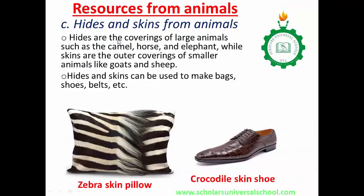You can also get hides and skins from animals. Hides are the covering of large animals such as camel, horse, and elephant. Skins are the outer covering of smaller animals like goats and sheep. Hides are gotten from camels, horses, donkeys, elephants, and birds. Skins are gotten from goats and sheep. Hides and skins can be used to make bags, shoes, and belts. The hide of a crocodile can be used to produce shoes, and the skin of zebra can be used to produce pillows.